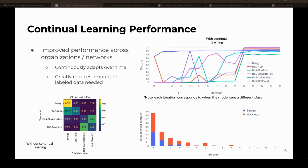Here are some results obtained so far, highlighting the importance of continual learning. This figure at the bottom shows what happens with regular machine learning detection methods — so no continual learning. It trains on an old set of data from one organization and predicts on a new set of data from another organization. As you can see, it does quite poorly and has trouble differentiating between different types of traffic, with each of these squares representing a score of how well it's doing.